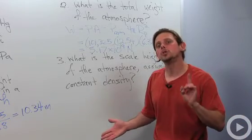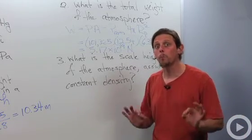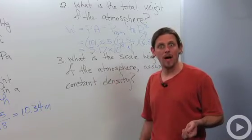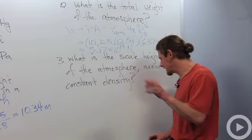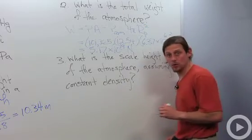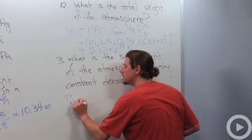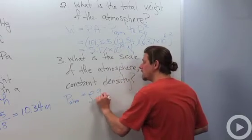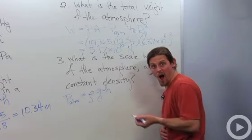So in this problem, what it's asking us to do is to assume constant density and just take the density at sea level, and then determine what the height, the appropriate height, would be that would give us the pressure that we measure. All right, so let's go ahead and do that because it'll be an interesting answer. So we'll say P atmosphere equals density G H. I want H.